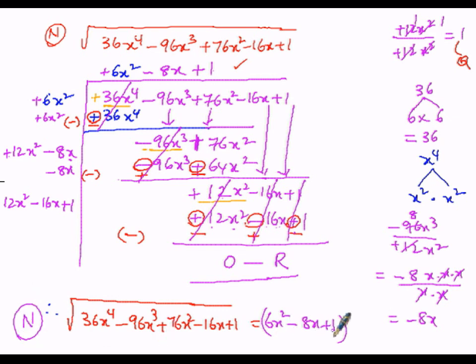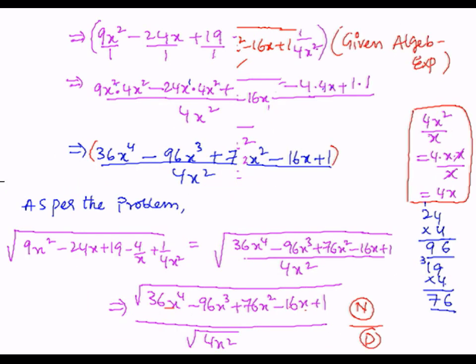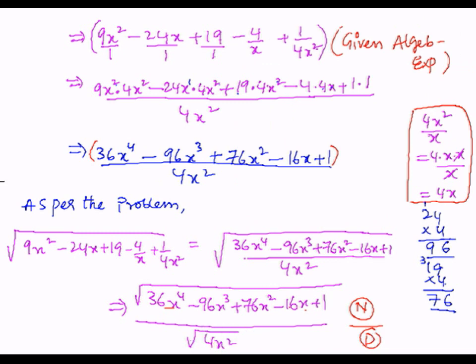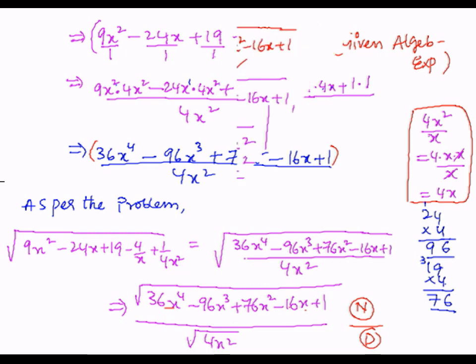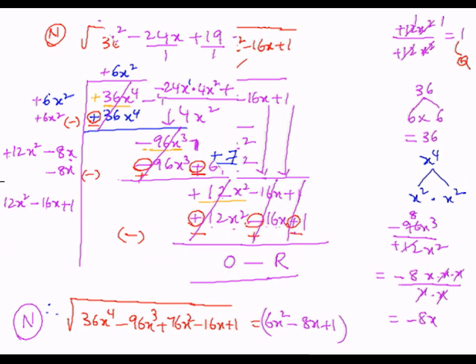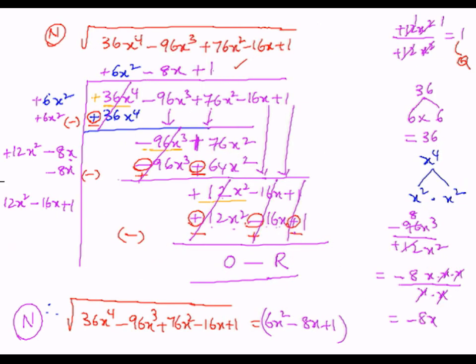In the similar manner, let us go for the denominator. The denominator is the square root of 4x squared. We are going to find out the root of 4x squared. Thank you.